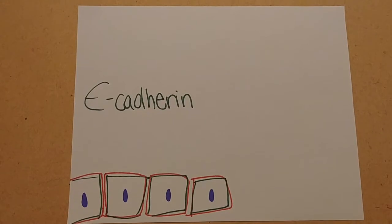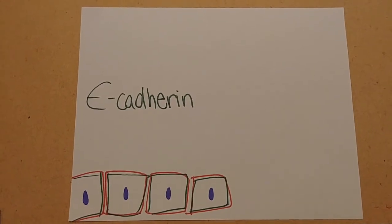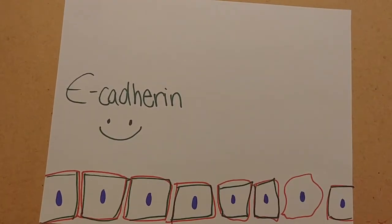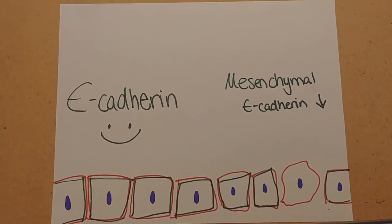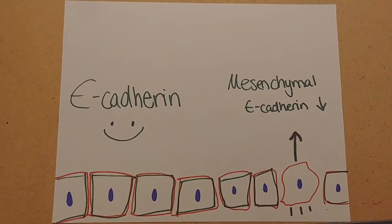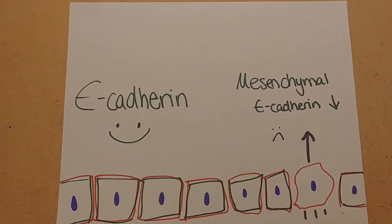Normal cells are attached to the epithelium by E-cadherin, a cell adhesion protein present in membranes. E-cadherin inhibits invasion and metastasis, but during EMT, E-cadherin is down-regulated, allowing the cell to detach from the surrounding cells and migrate.